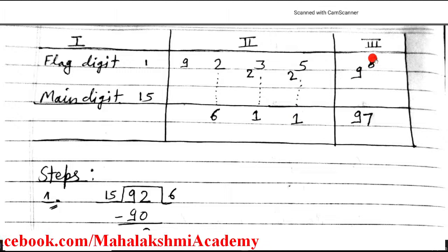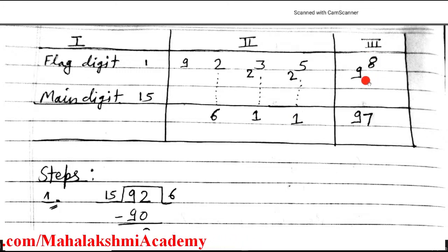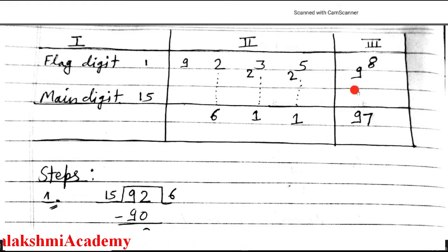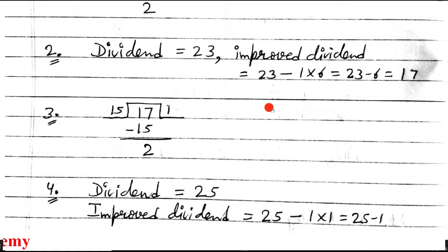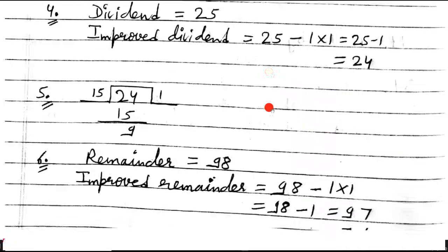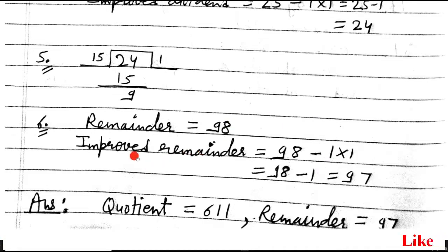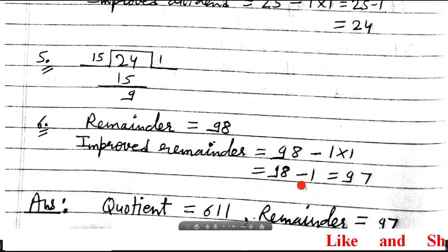This is the third section, which is for the remainder. Remainder is 98. To find the improved remainder: 98 minus 1×1 = 98 minus 1 = 97.